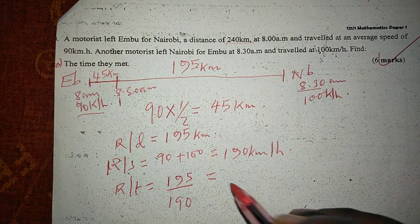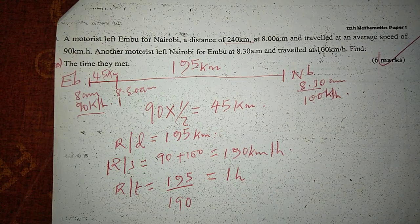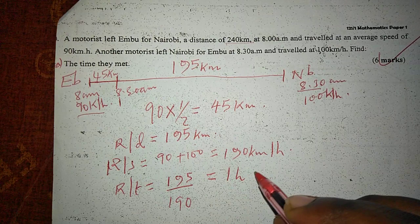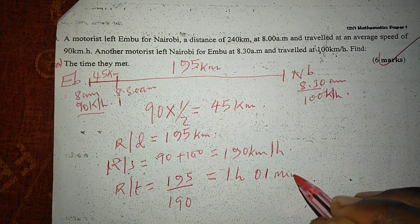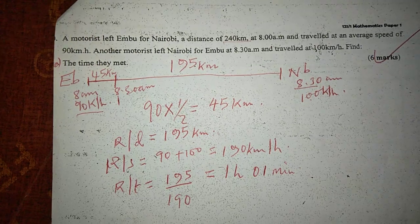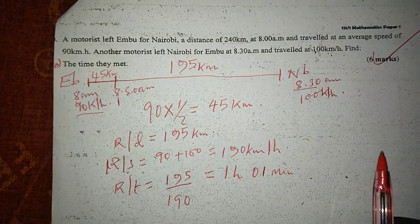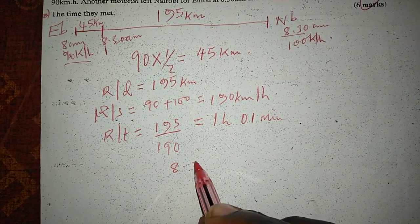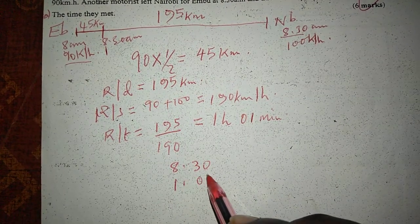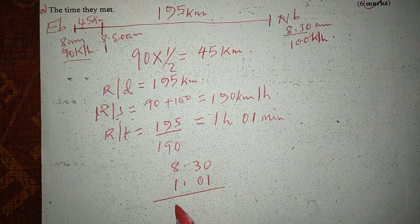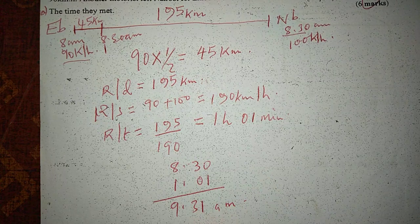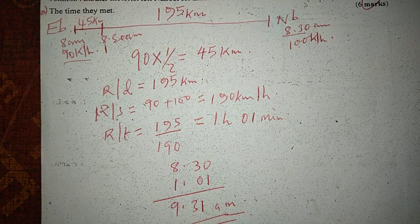This gives us one hour and one minute. Therefore, because they are taking one hour and one minute, the time they are meeting is 8:30 plus one hour and one minute, and this is 9:31 a.m. So these are people who will meet at 9:31 a.m.